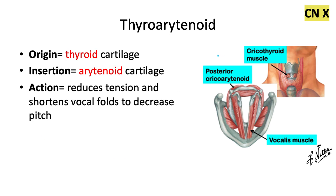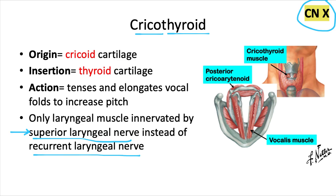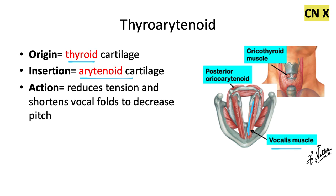And finally, we have the thyroarytenoid muscle. This one originates from the thyroid and inserts into the arytenoid cartilage — again, nice to match up with the name. The action here is the opposite of the last one: this one reduces the tension and shortens the vocal folds in order to decrease vocal pitch. Also listed here is the vocalis muscle, a tiny strand-like muscle that makes fine adjustments in pitch. Whereas the cricothyroid and thyroarytenoid muscles make larger scale changes in pitch, the vocalis just makes little minor adjustments.